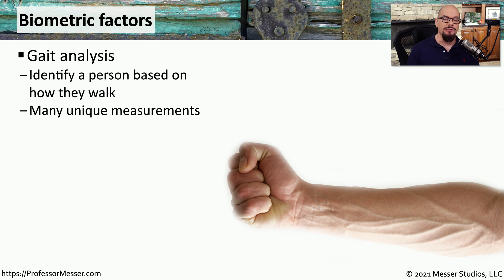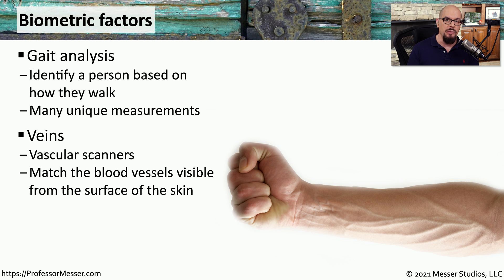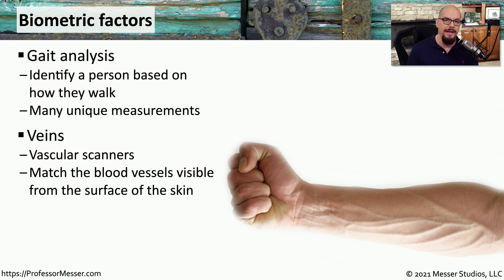A biometric factor that's rarely used but is relatively accurate is gait analysis. This examines the different characteristics that someone has when they're walking. Everyone has a different way of walking, and gait analysis will measure those differences and determine one person's gait versus another. Similar to retinal scanners that look at capillaries in the back of the eye, we also have vascular scanners that can look at veins in our arms and determine who a person is based on the unique layout of their veins.